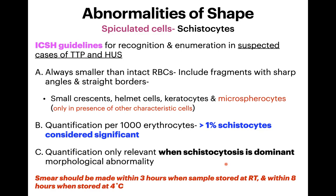One more important point: smears should be made within 3 hours when the sample is stored at room temperature, and within 8 hours when stored at 4°C. Samples stored longer begin to show shape abnormalities due to storage artifact. So for suspected TTP or HUS, make slides as early as possible. This also applies to automated analyzers that provide a fragmented RBC count (FRC) — the sample must be processed promptly, as storage artifacts will affect the auto-analyzer results too.